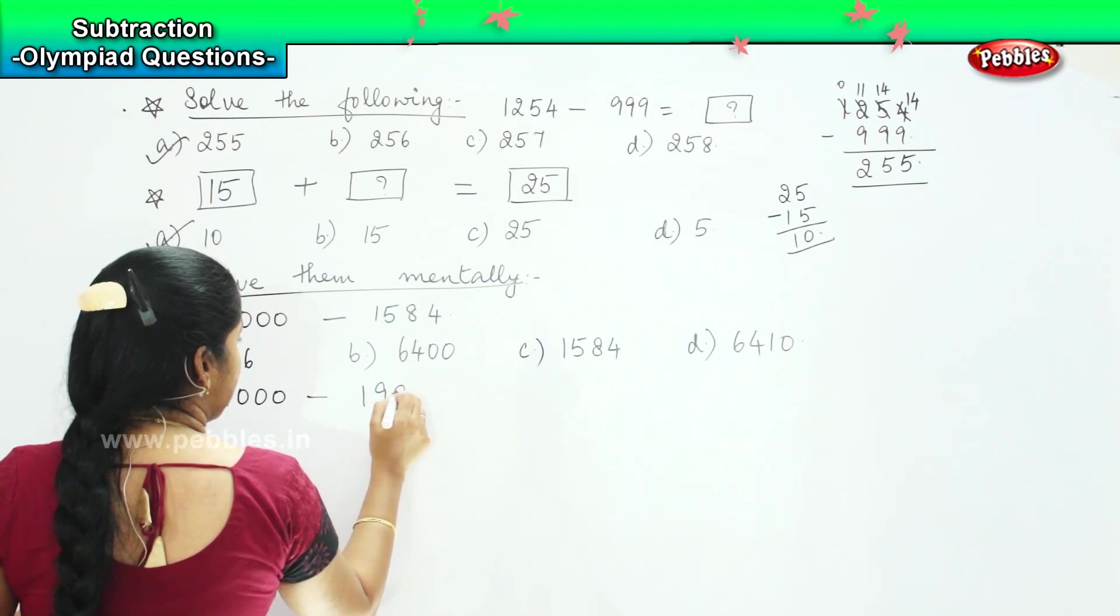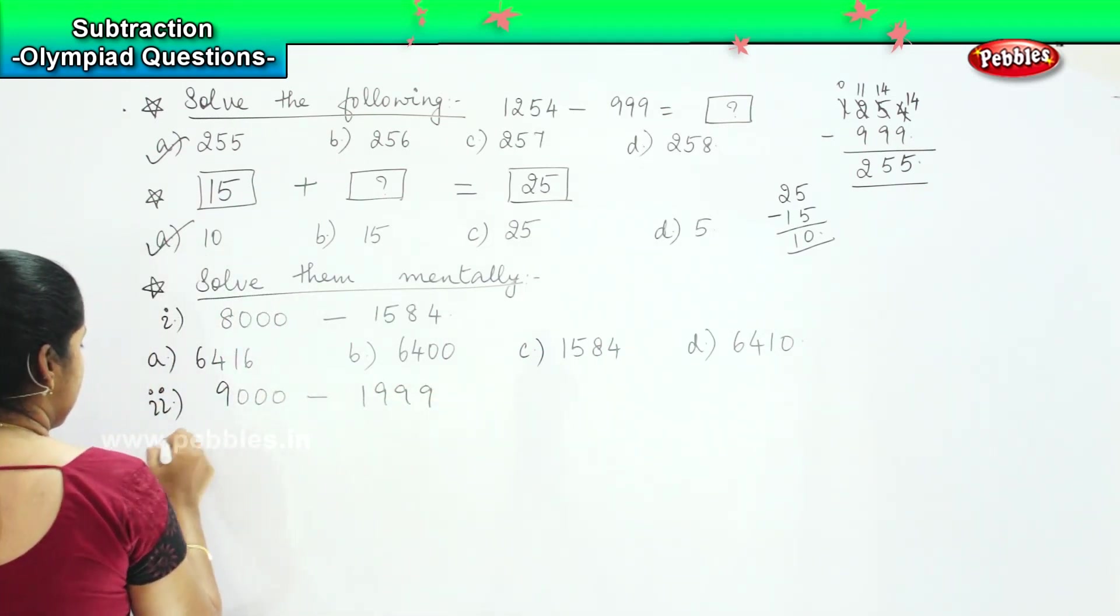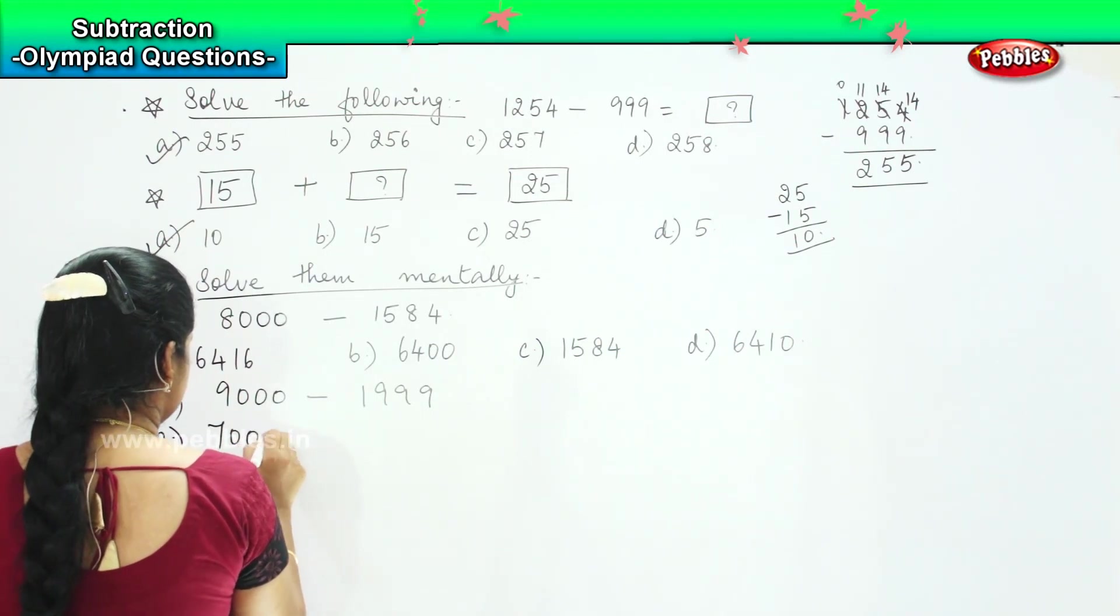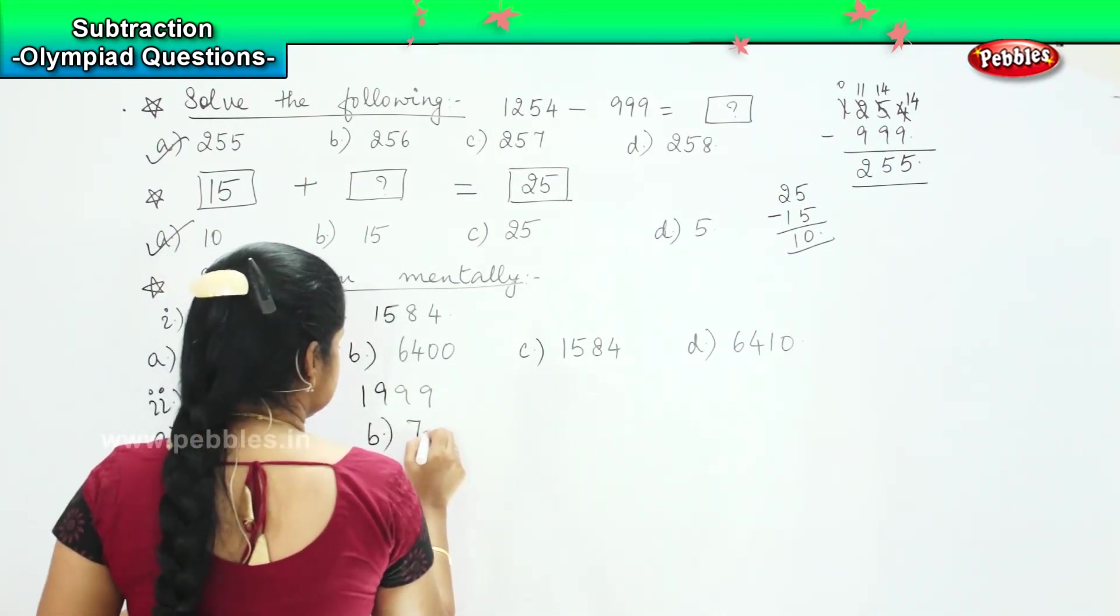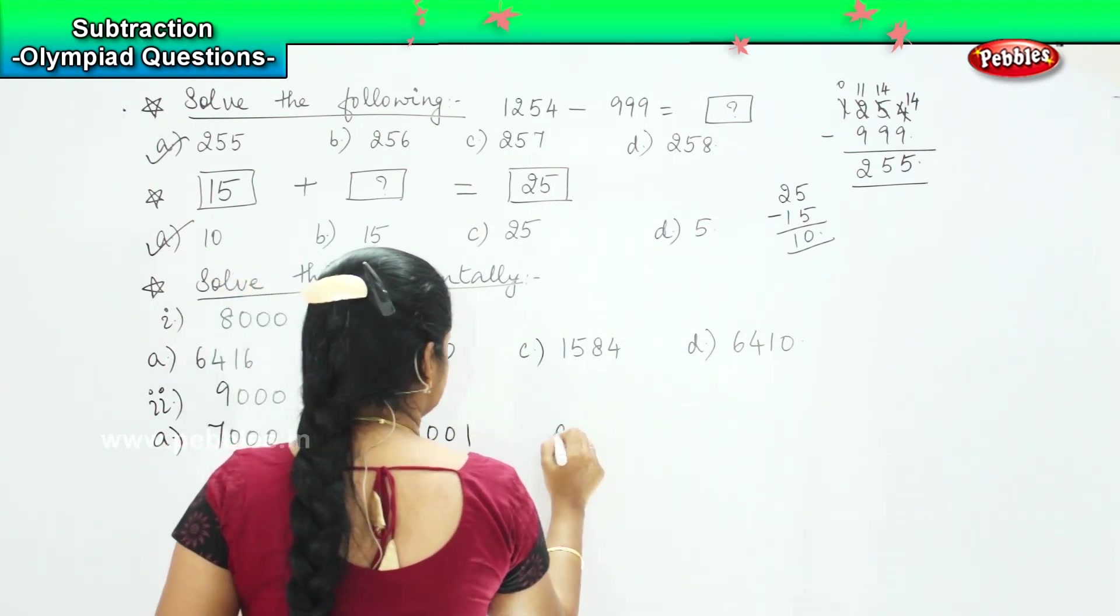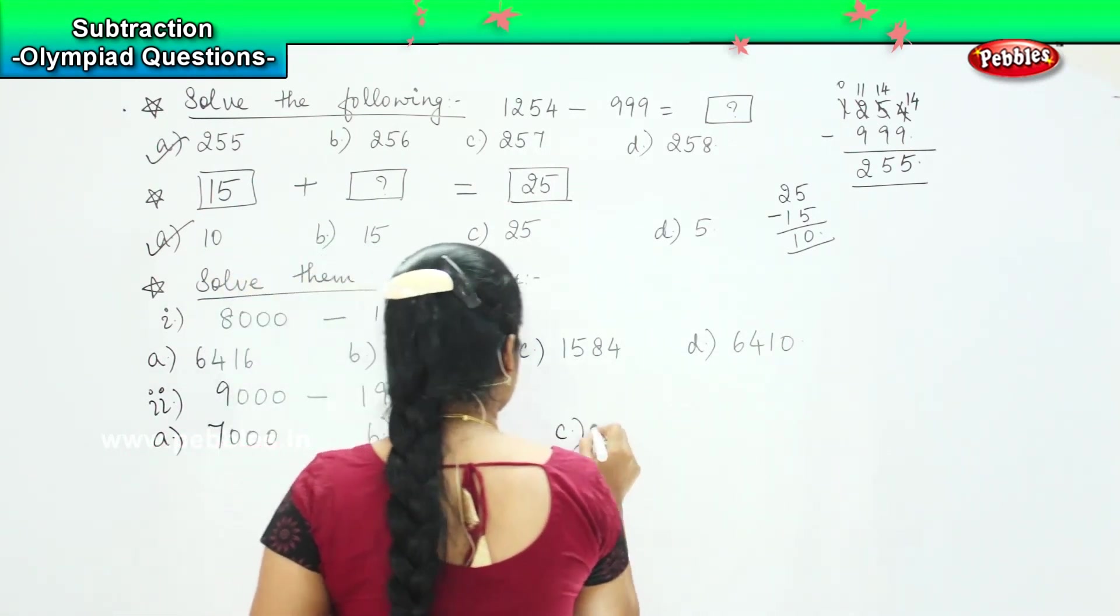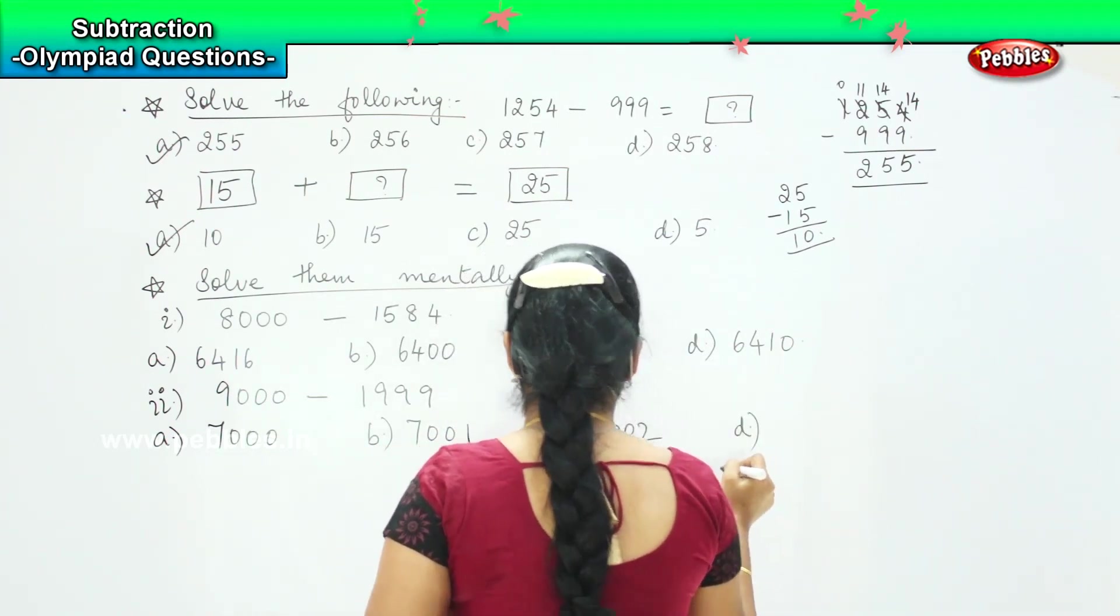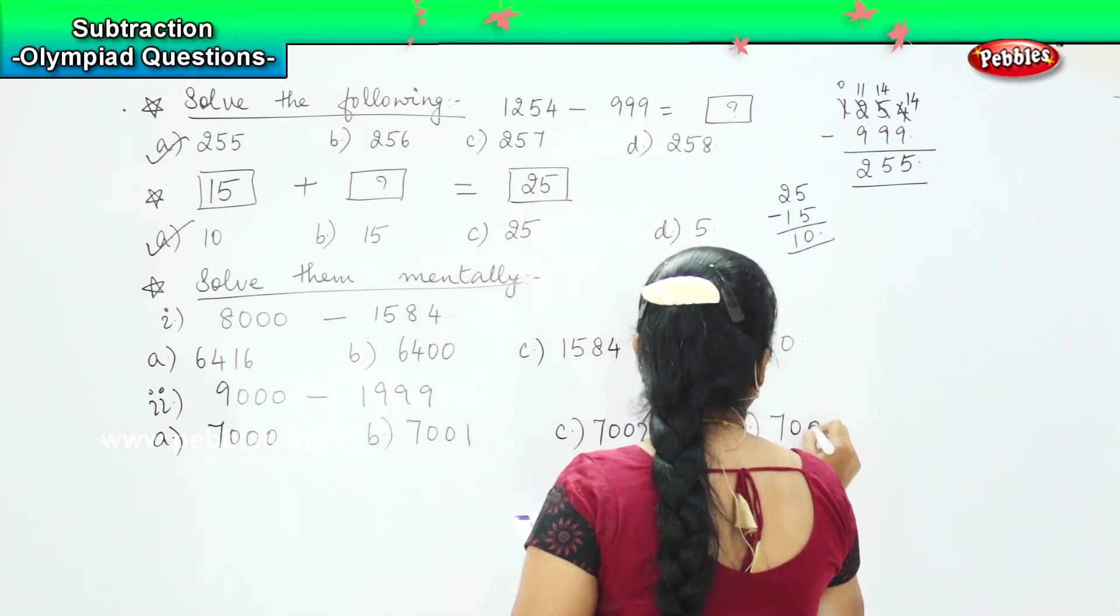Option C 9000 minus 999. And your options are 7000, option B 7001, option C 7002, and option D 7003.